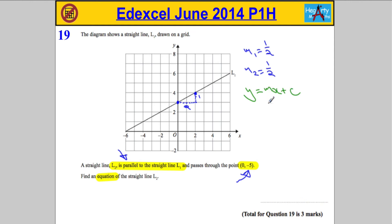Where M is the gradient and C is the Y intercept. Which means that the line L2 must have the form Y equals a half X plus, and the value of C is negative 5. So it'll be plus negative 5, which is actually just minus 5.